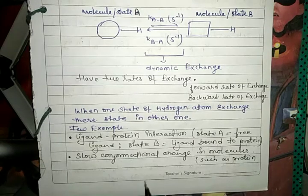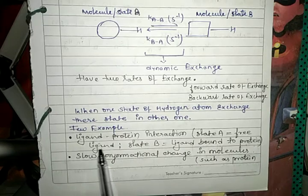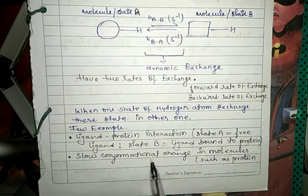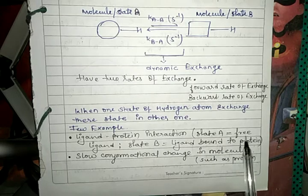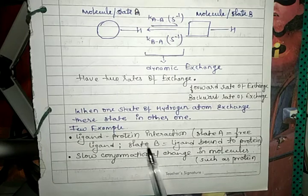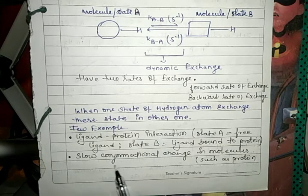We will now look at a few examples where chemical exchange takes place. The first example is ligand-protein interaction. When a ligand and protein interact with each other, chemical exchange also takes place. State A is the free ligand and state B is the ligand bound to protein, and between both of these, chemical exchange occurs.